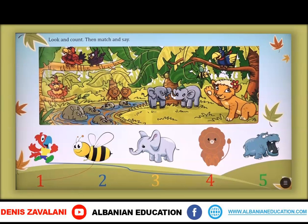Let's continue with the elephants. Le të vazhdojmë me elefantët. How many elephants are there in the photo? One, two. There are two elephants in the photo. Sa elefantë kemi në fotografi? Këtu kemi vetëm dy elefantë. Let's match the elephant with a number. Two.